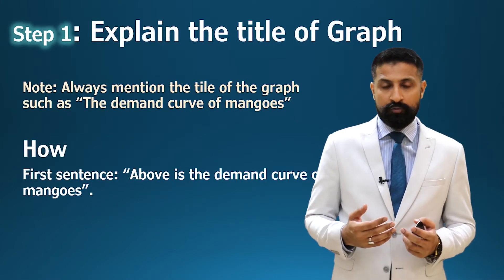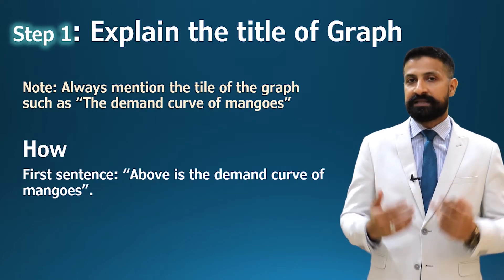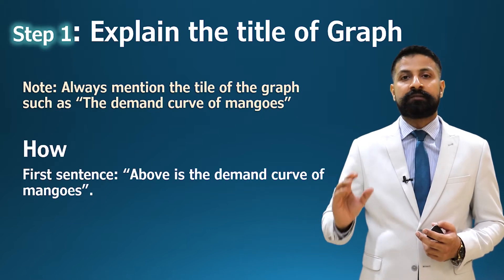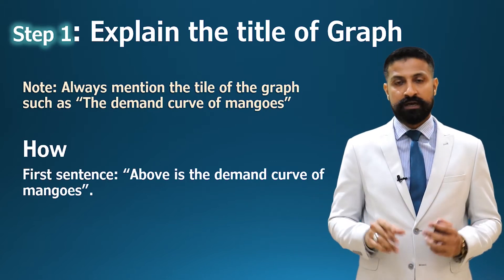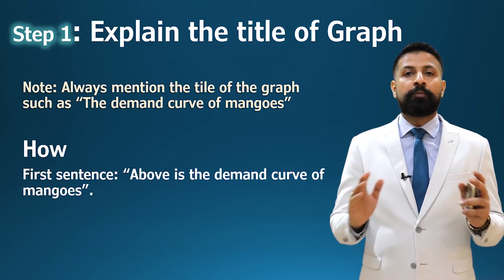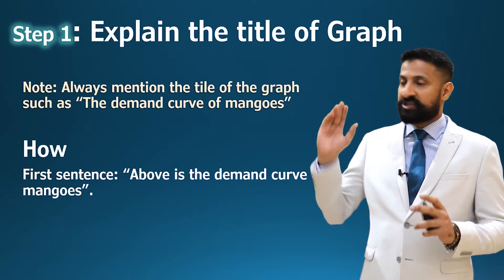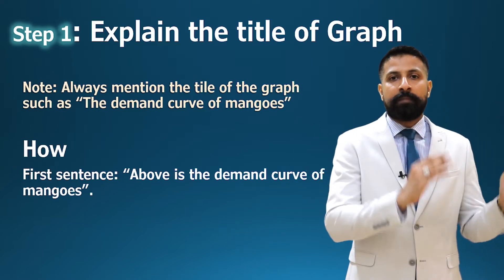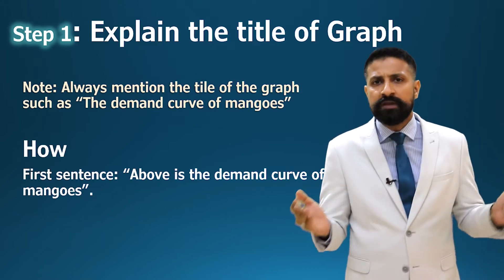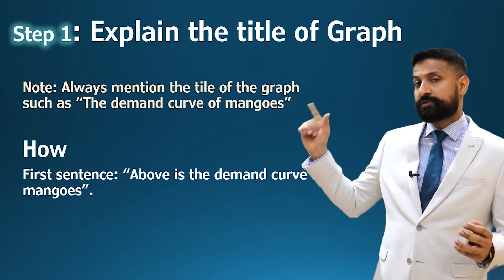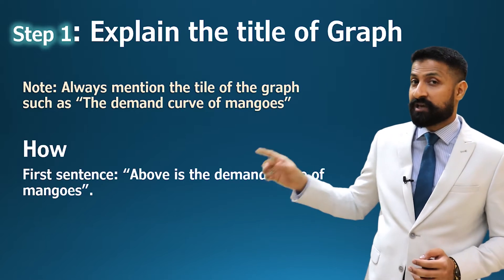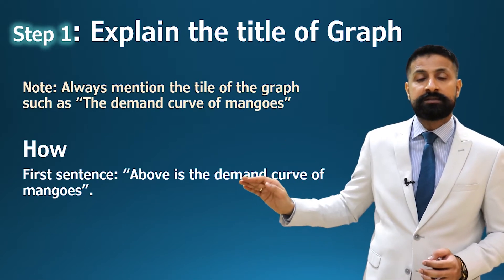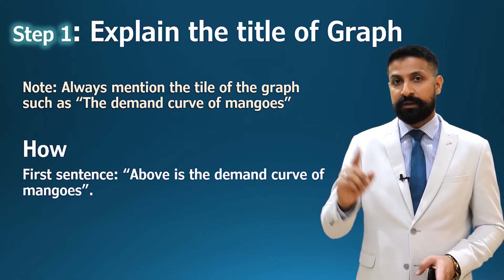In this lecture I will show you how to explain any economics graph in 9 steps. Step number one: the first and most important thing is to write the title of the economics graph. If you don't write the title, you won't get marks. For example, if it's a demand graph you write 'the demand curve of mangoes,' or for supply you write 'supply curve of wheat.' Then in your explanation below, you write: 'This is the demand curve of mangoes.' That's it — step number one.